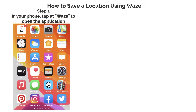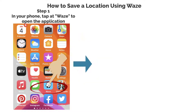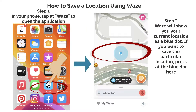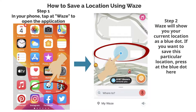Step 1. In your iPhone, tap Waze to open the application. Step 2. Waze will show you your current location as a blue dot. Did you want to save this particular location? Press at the blue dot here.